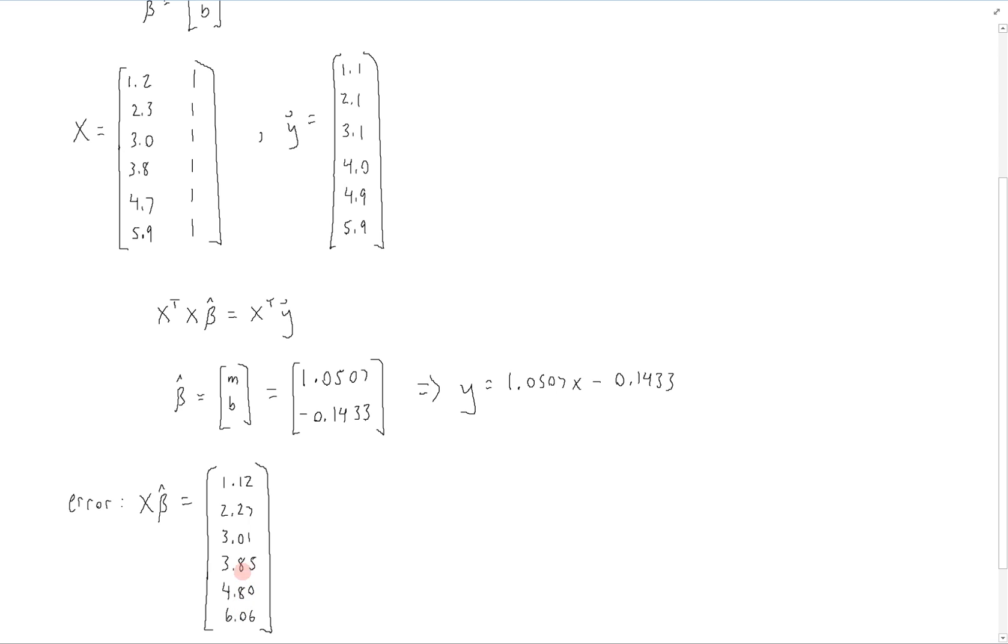And we can see how they compare to the original y values that we actually had here. So they're pretty close, but they're not exact, as you can see by comparing them in their individual entries. From that, we can get that the error is equal to the distance between those original observed data points and the predicted data points. And performing this calculation, we get that the error is equal to 0.3109.